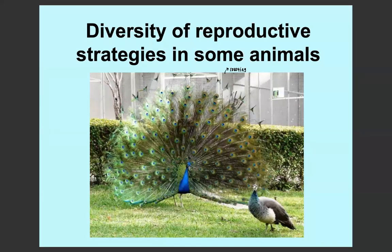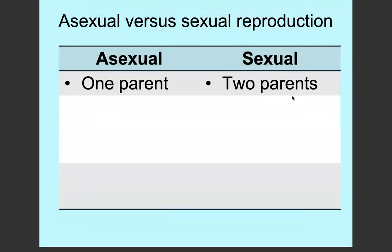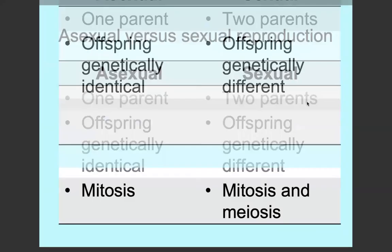This video explains the diversity of reproductive strategies in some animals. If we look at asexual versus sexual reproduction, asexual reproduction involves one parent where sexual reproduction needs two parents. Asexual reproduction produces offspring that are genetically identical to each other and to the parent, whereas sexual reproduction produces offspring that are genetically unique from each other and from the parents.